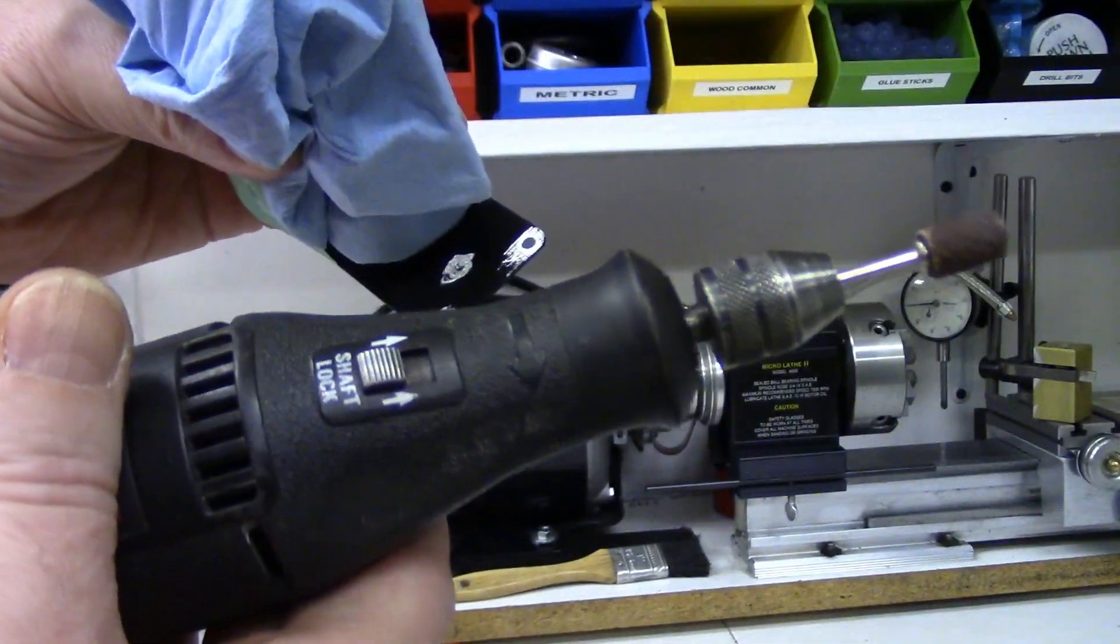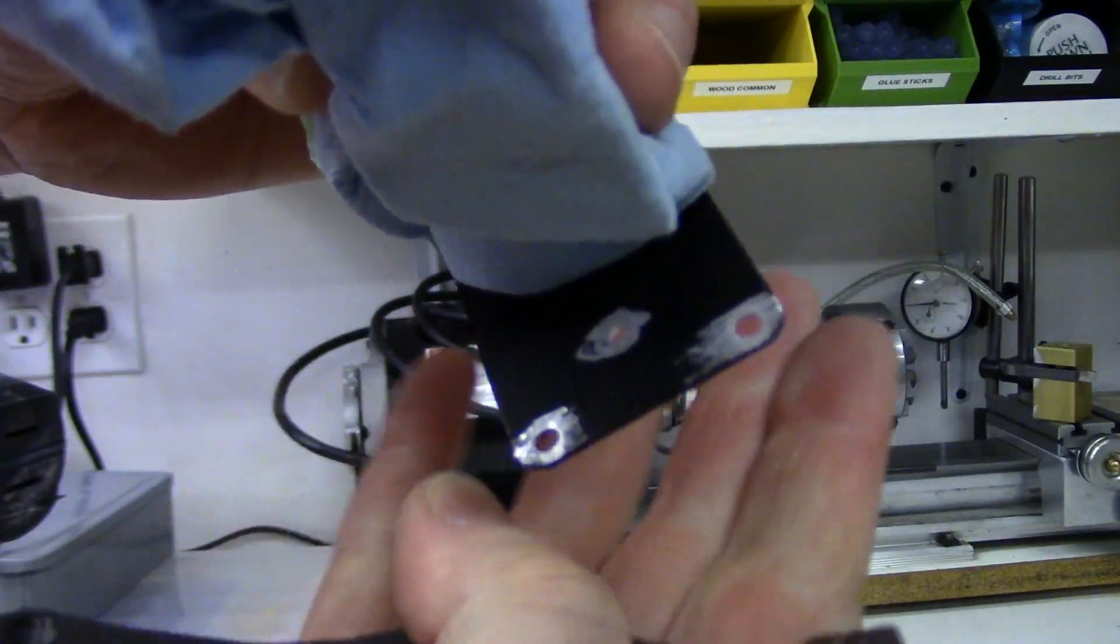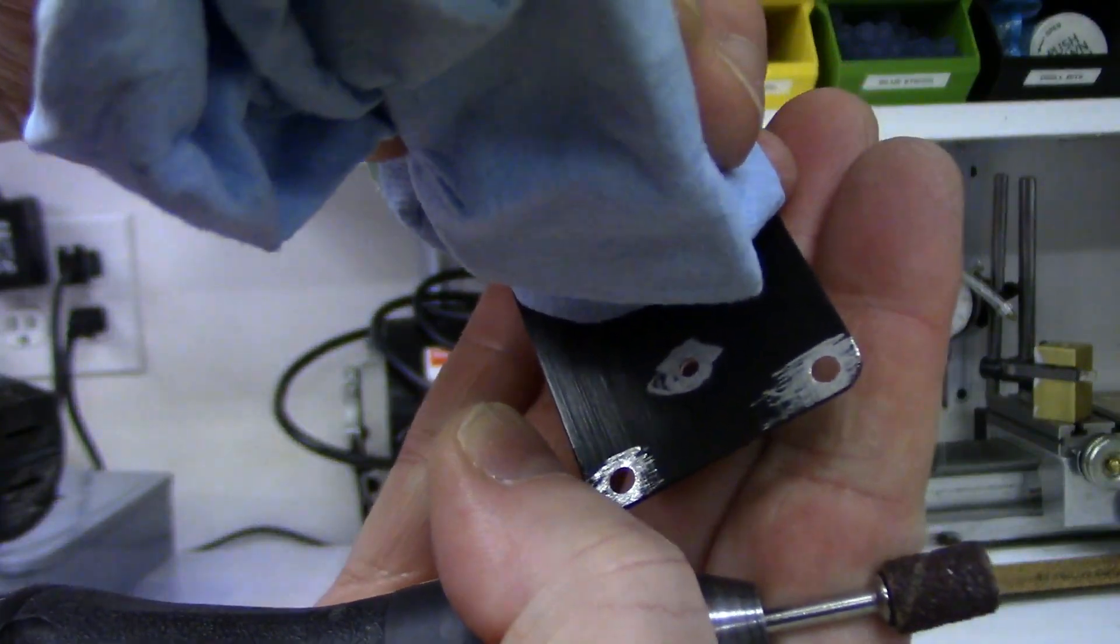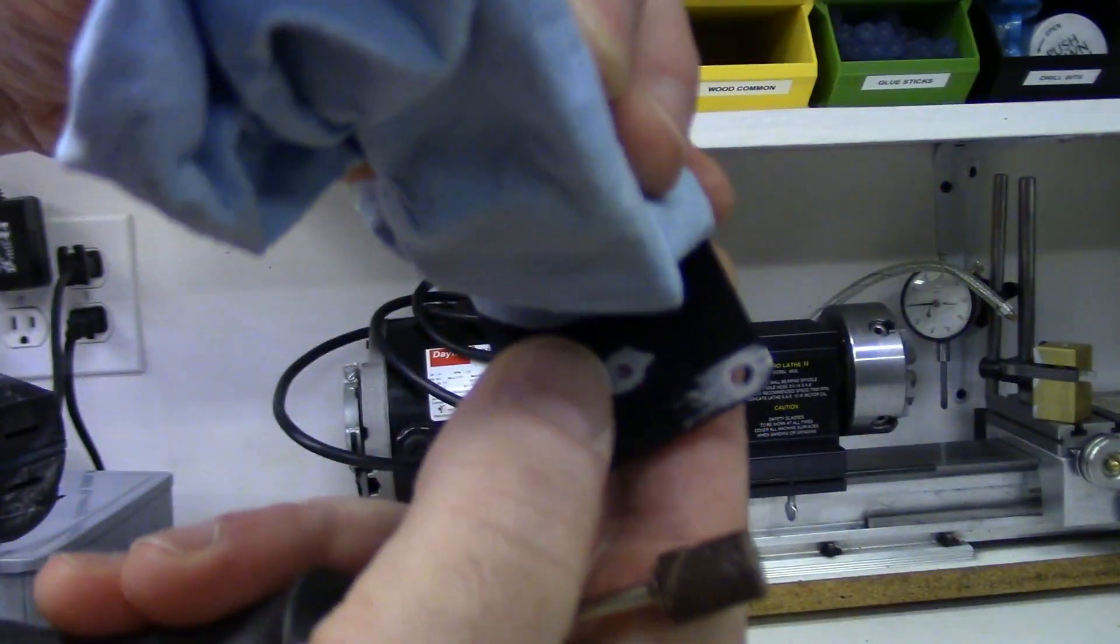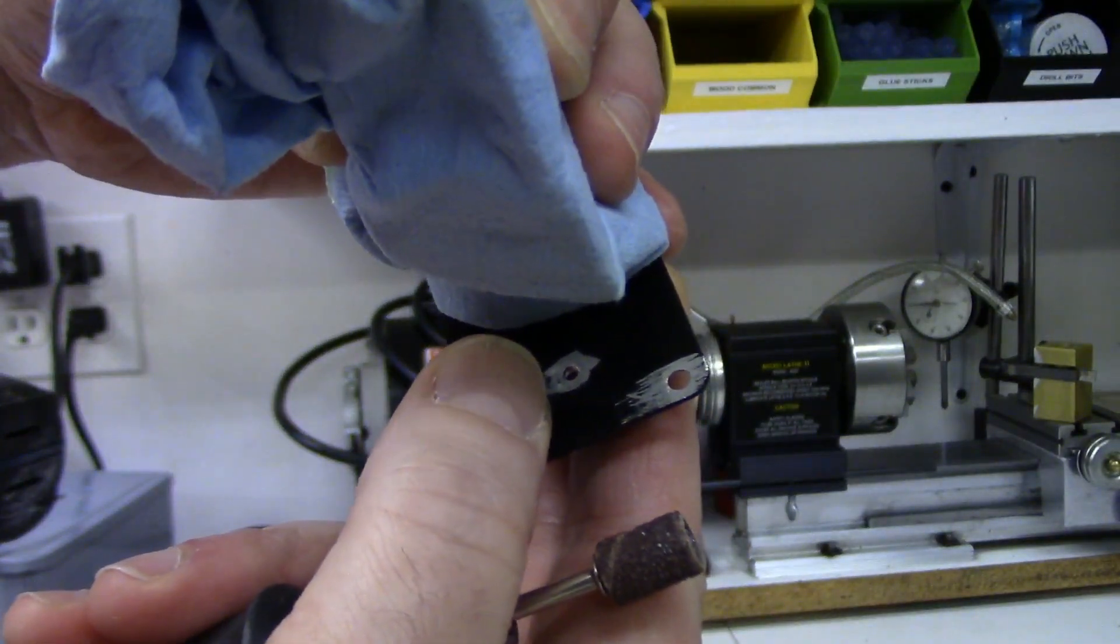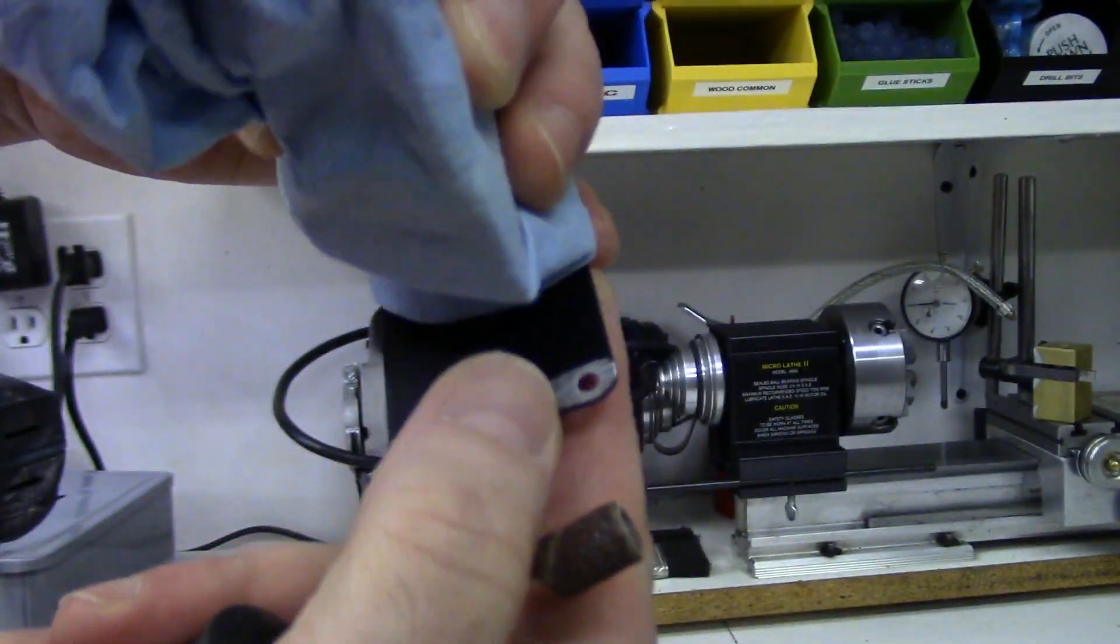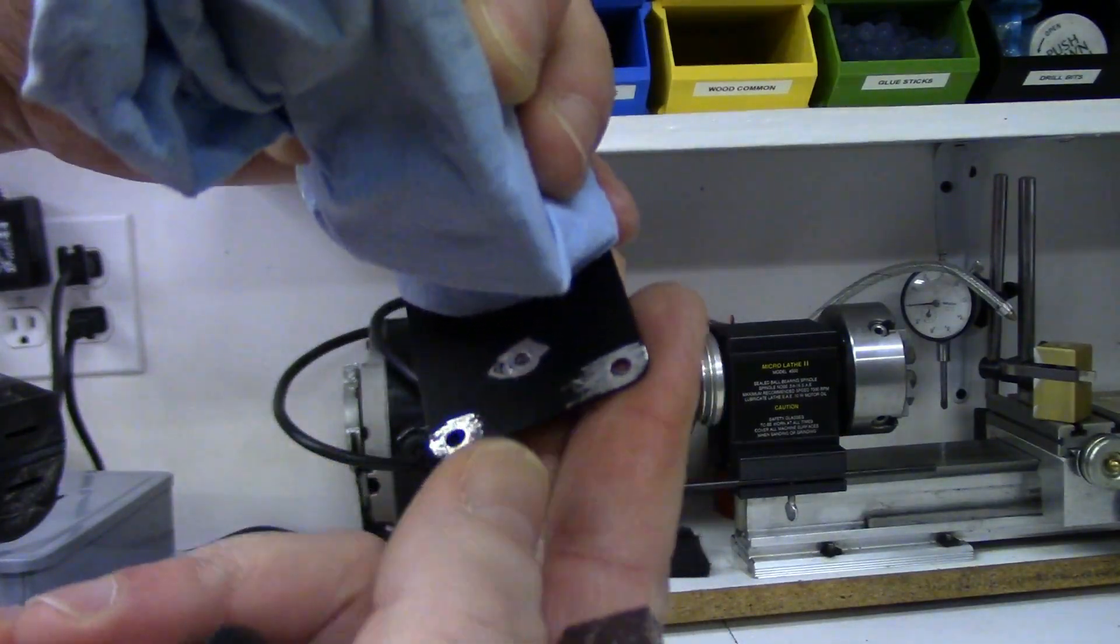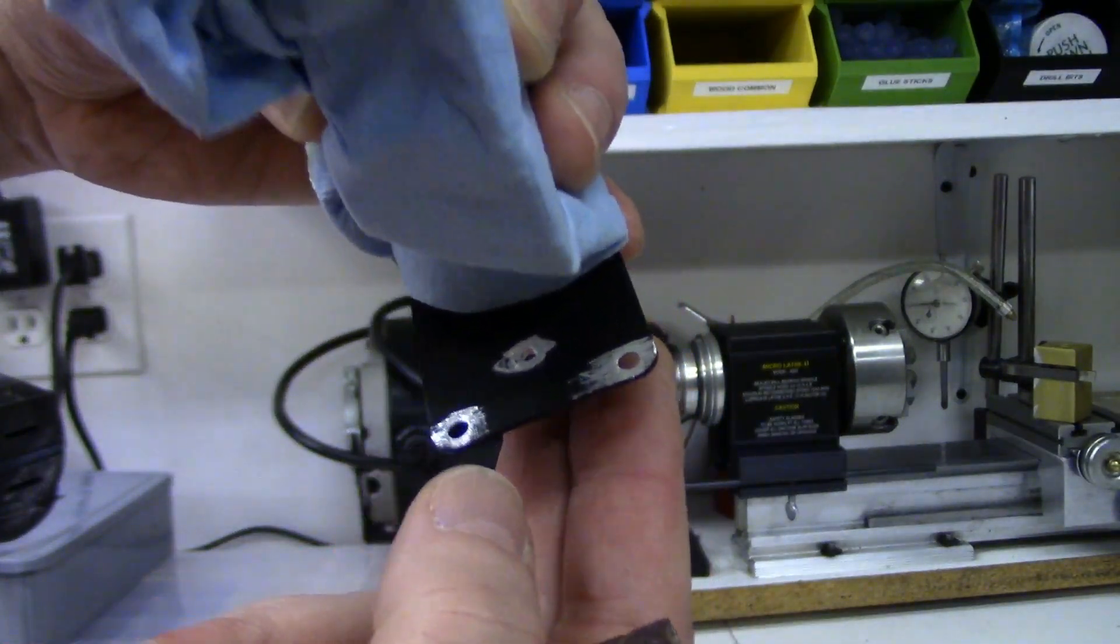Now I just have the dremel out and I just cleaned off the back of that hole I drilled so there's good electrical conductivity between the little wire eyelet. And then I also just ground the anodizing off on these two screw holes as well.